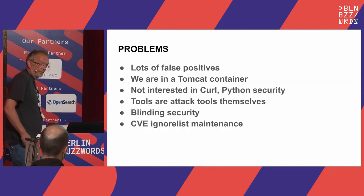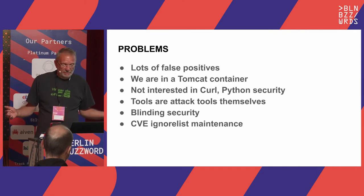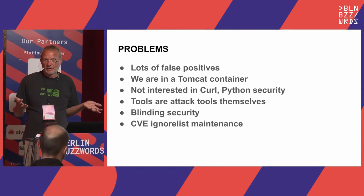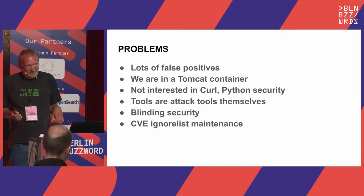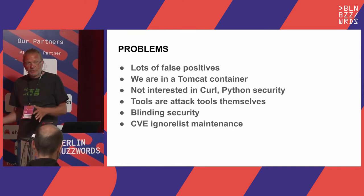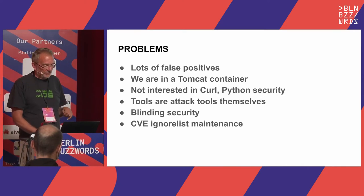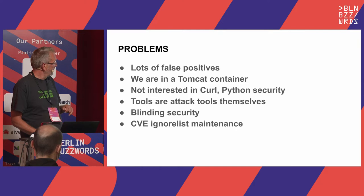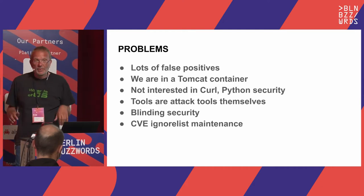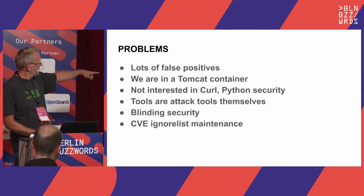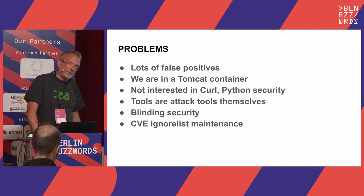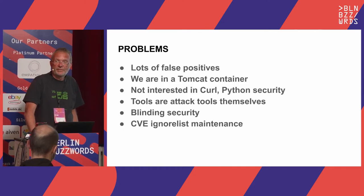So what do we do? We have lots of false positives. We have a Tomcat container, and most Java applications are not interested in curl or Python. The tools themselves become attack tools — if I can execute Python code, I can also download things from the internet. We are blinding security. To get this into our CI/CD pipeline, we would have to create a big CVE ignore maintenance list — effort for multiple full-time security people. This is a waste of time.